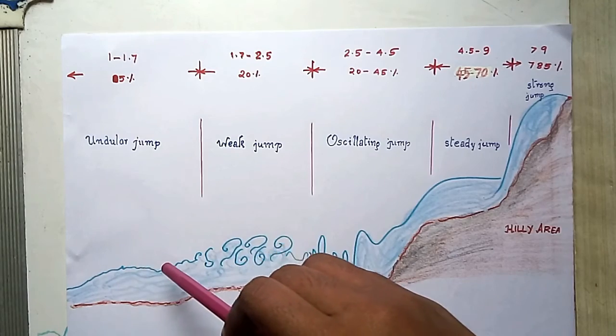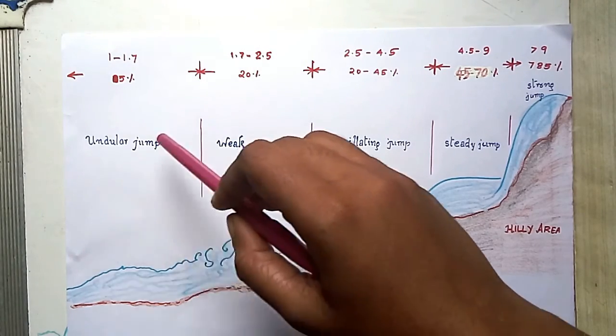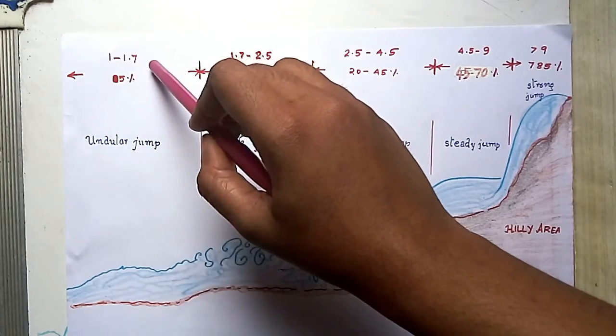From further down, the water surface shows an oscillation and the jump is called an undular jump. The energy dissipation is quite low, being only about 5%. Froude number ranges from 1 to 1.7.